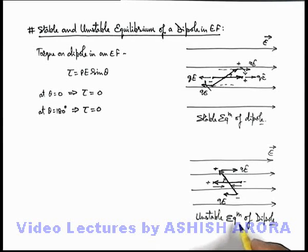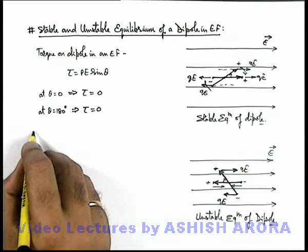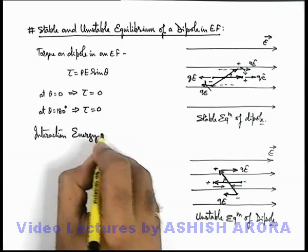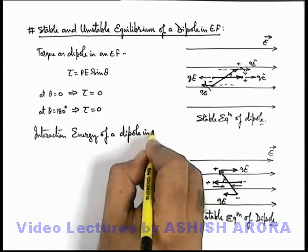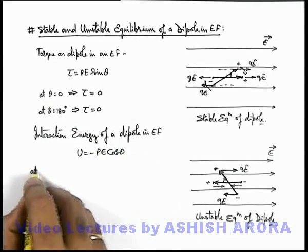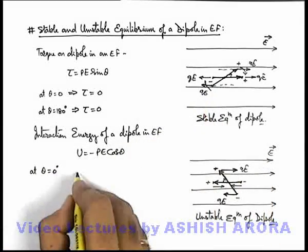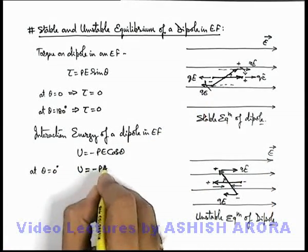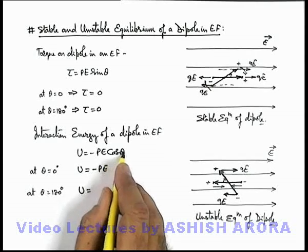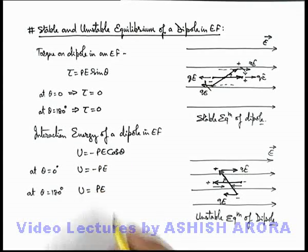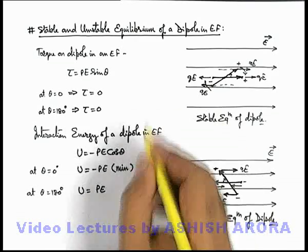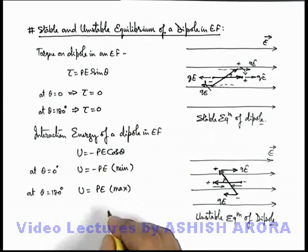We can also verify this with the interaction energy of the dipole. The interaction energy of a dipole in an electric field is given by U equals minus pE cosθ. At θ equal to zero degrees, the interaction energy is minus pE, which is the minimum value for all orientations of the dipole. At θ equal to 180 degrees, the value of U is plus pE, which is the maximum possible potential energy in this situation.